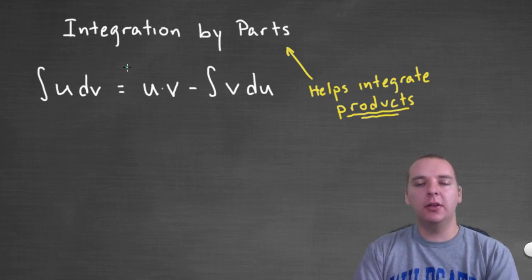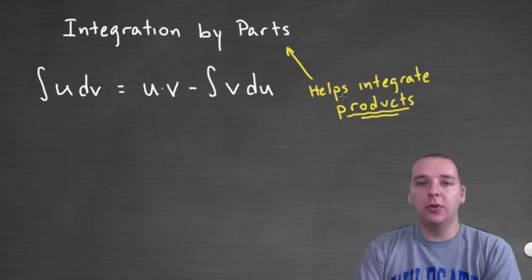So here's what it says and then I'll explain it. The integral of the product u times dv is going to equal u times v minus the integral of v du. Now first, what is this used for? Integration by parts is really helpful when you're integrating something difficult that has a product. When you have a product we're going to think integration by parts.